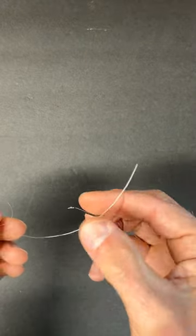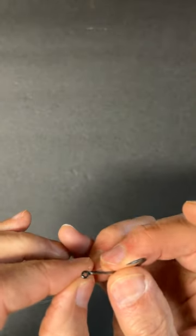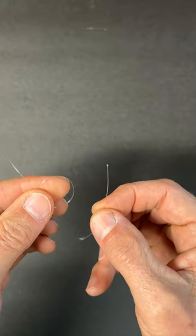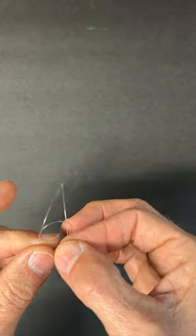Then take your hook, run the tag end through the eye of the hook, grab the loose overhead knot, and run this back up through.